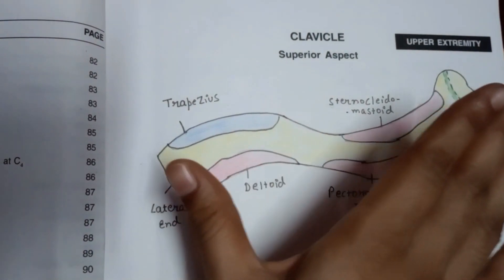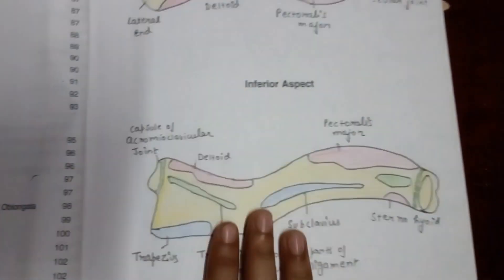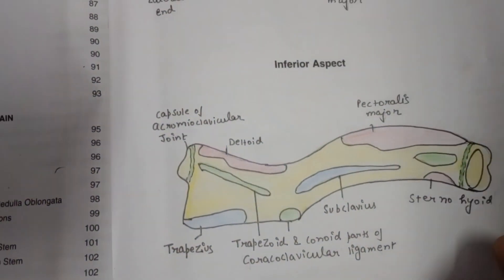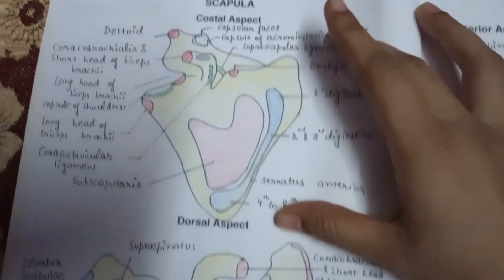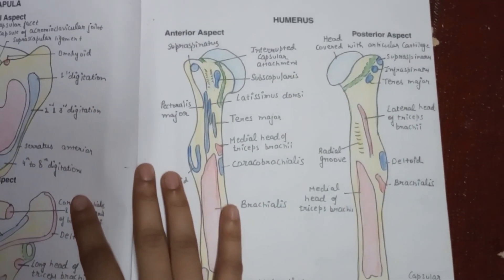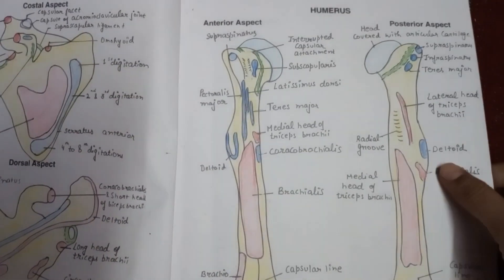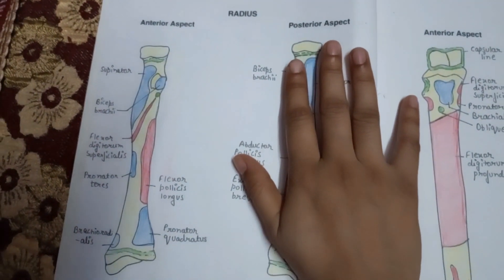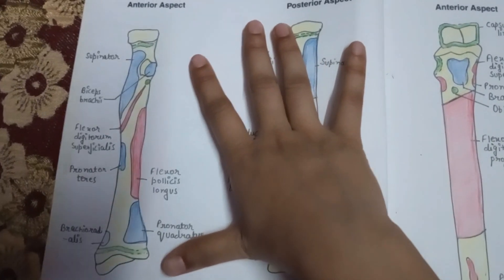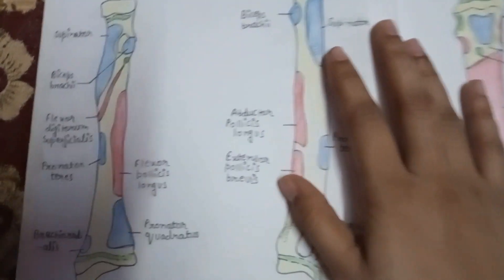Let me show you firstly — it's the clavicle, and the diagram is differentiated into superior aspect and inferior aspect. I have drawn all the diagrams. You can see it's the scapula, costal aspect and dorsal aspect. In the case of humerus, the diagram is differentiated into anterior aspect and posterior aspect. After humerus, it's your radius — anterior aspect and posterior aspect — all coming under your upper extremity.